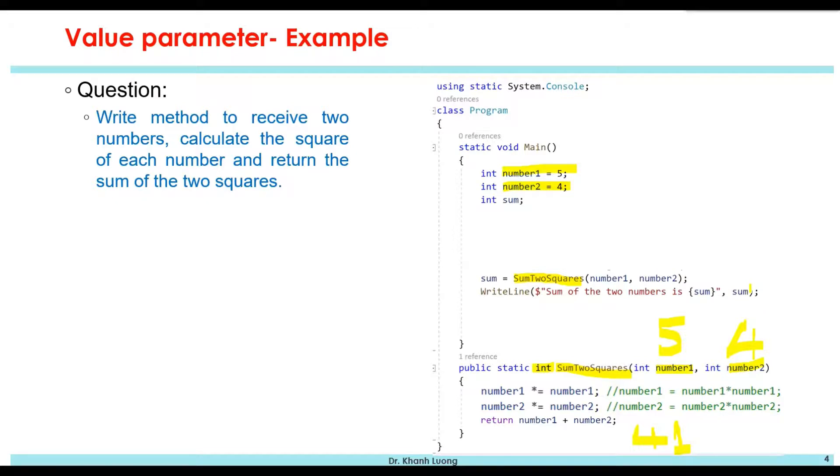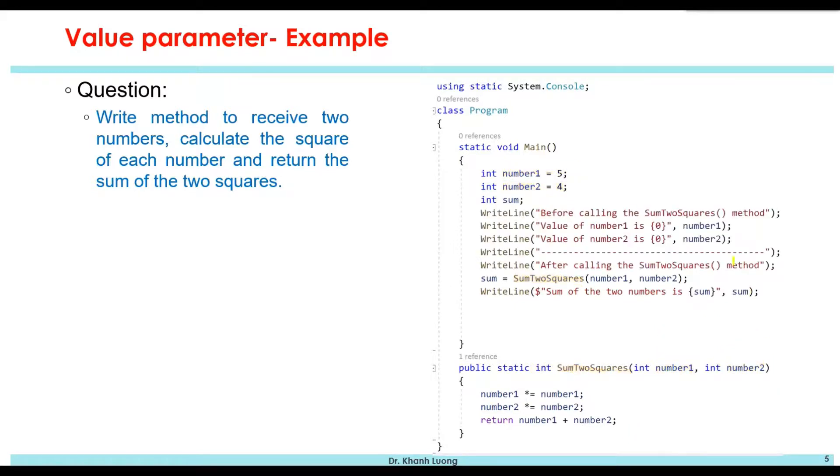Now let's see, we want to investigate the value of the two variables, number1 and number2, before and after we call the method sum2square. So we have two statements here to display the value of number1 and number2 before calling the method. And after calling the method sum2square, we also want to display the value of number1 and number2 as well. Can you guess what is the value?